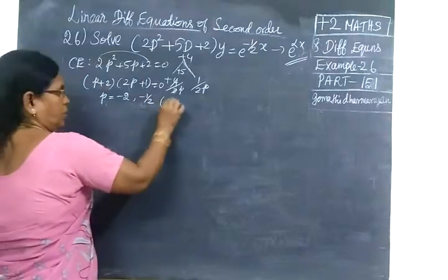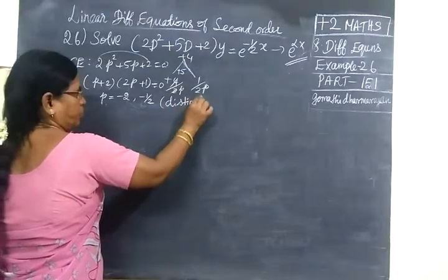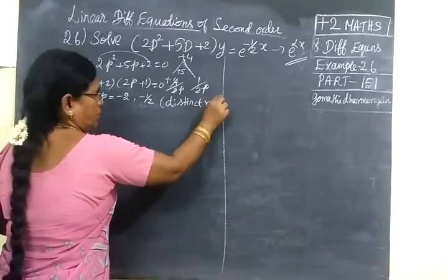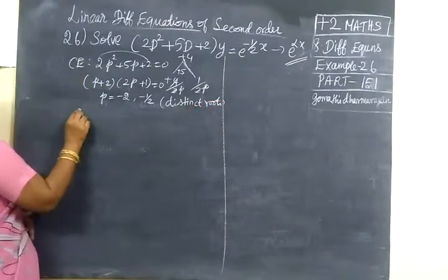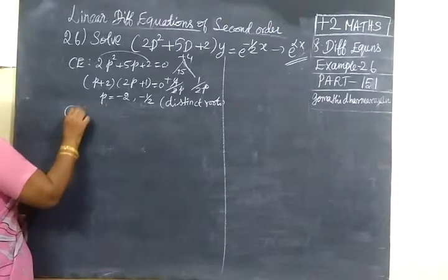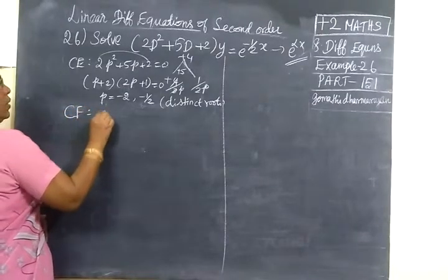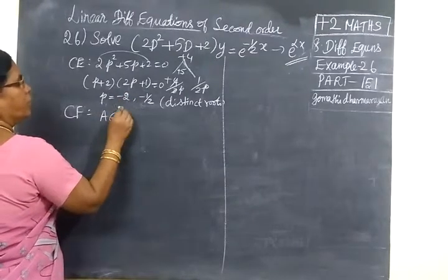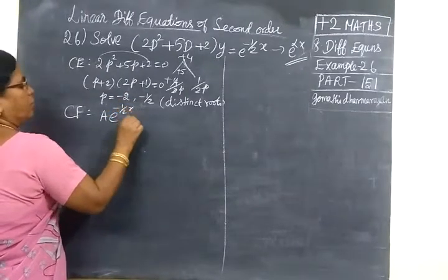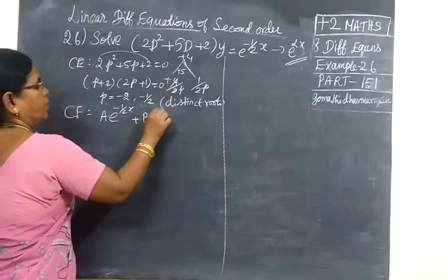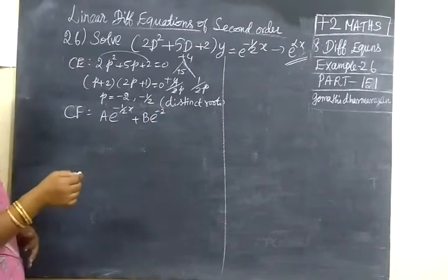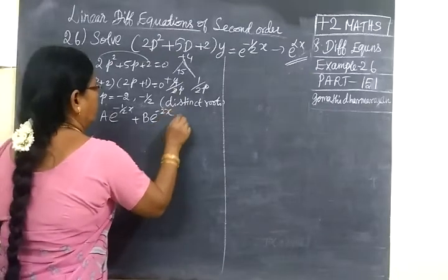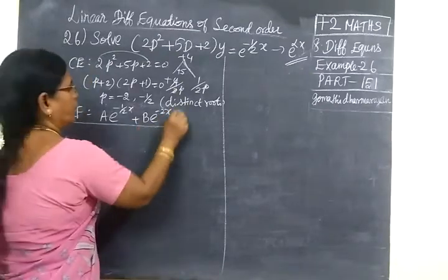The roots are distinct. For distinct roots, the complementary function is CF = ae^(first root · s) + be^(second root · s). Usually you write the larger number first. So CF = ae^(−s/2) + be^(−2s).